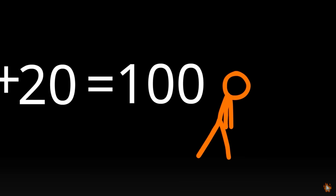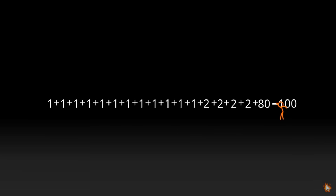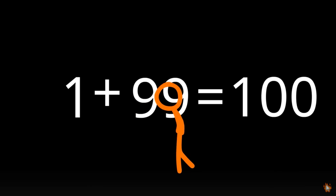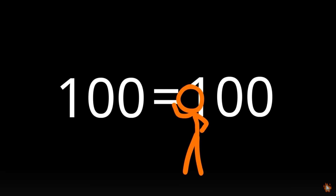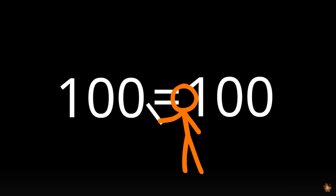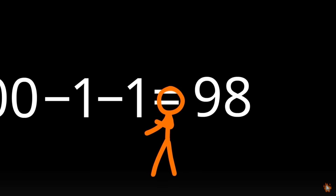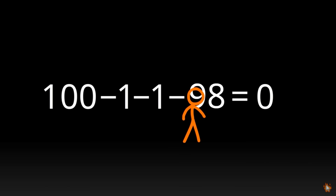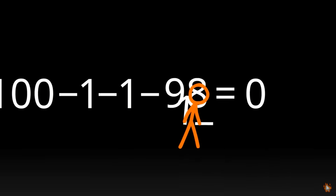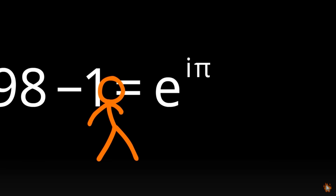He got to 100. Congratulations. Now what's beyond 100? You have taken the addition — and another stick — and subtraction. We are going from addition to subtraction and back to 0. We're going down to the negatives, I see.